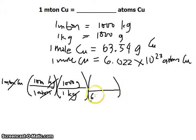So we have now the units in grams. Using 1 mole of copper equivalent to 63.54 grams of copper, the gram units cancel out and we have moles of copper.